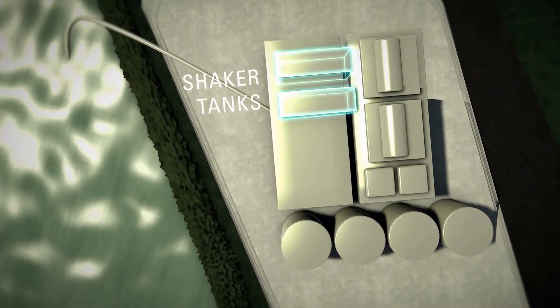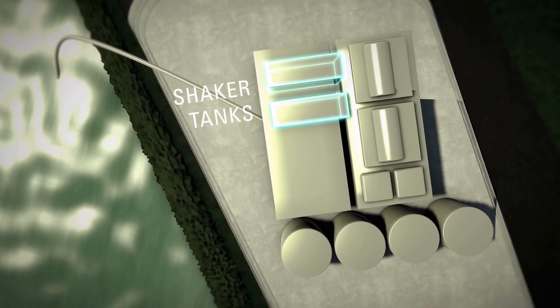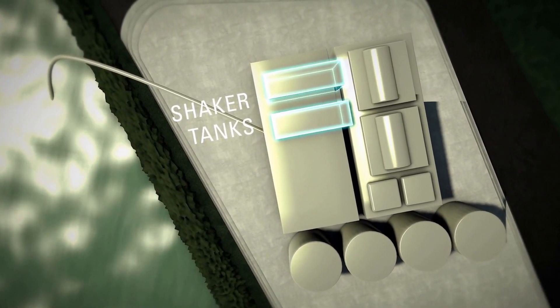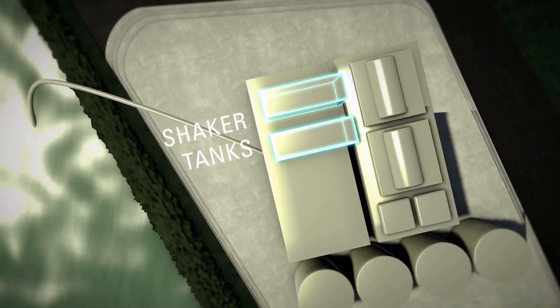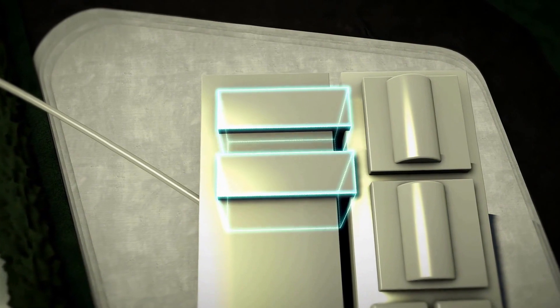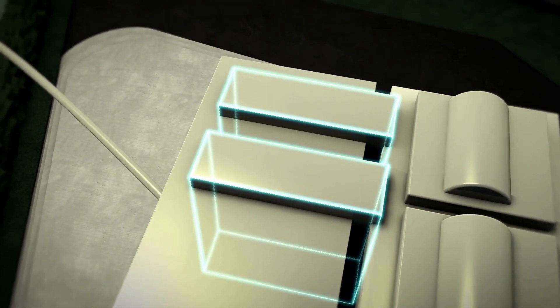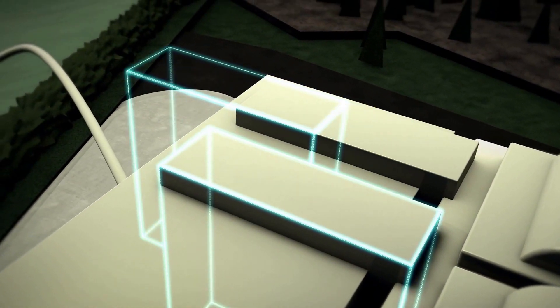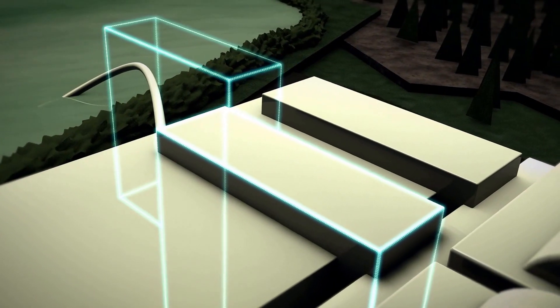Caden has custom designed a shaker tank that uses vibrational screens to mechanically separate large solids from the separation process. This tank is extremely easy to operate and can be added to or subtracted from the process depending on the project scope.